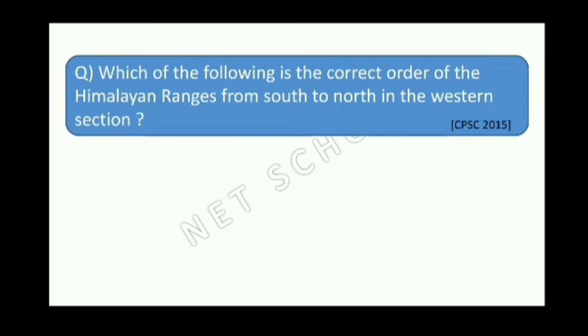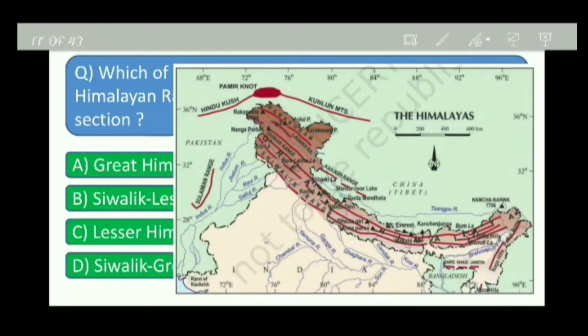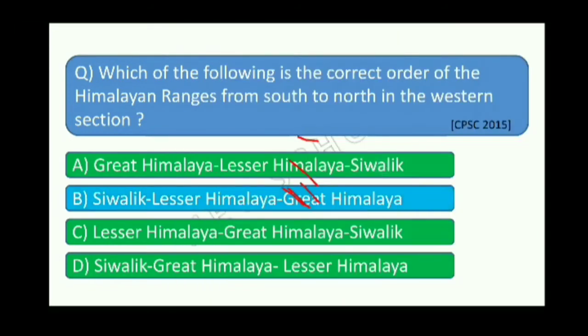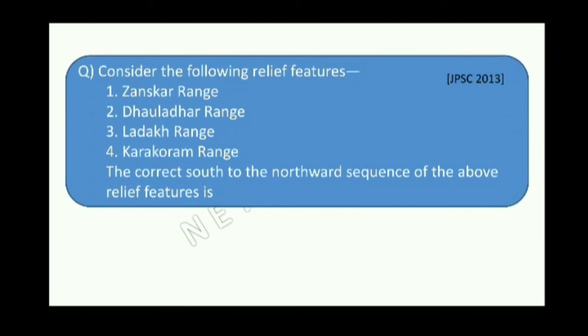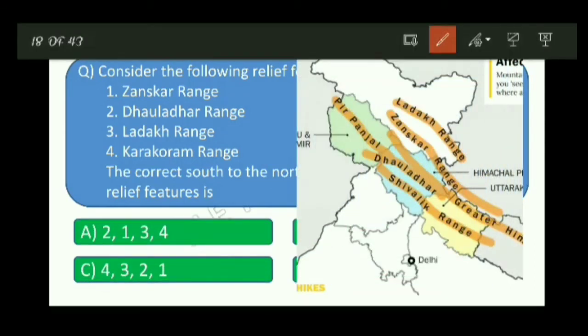Which of the following is the correct order of the Himalayan ranges from south to north in the western section? The south-to-north sequence of the following relief features — Zaskar Range, Dhauladhar Range, Ladakh Range, Karakoram Range — must be arranged. From south to north: Dhauladhar, Zaskar, Ladakh, Karakoram.